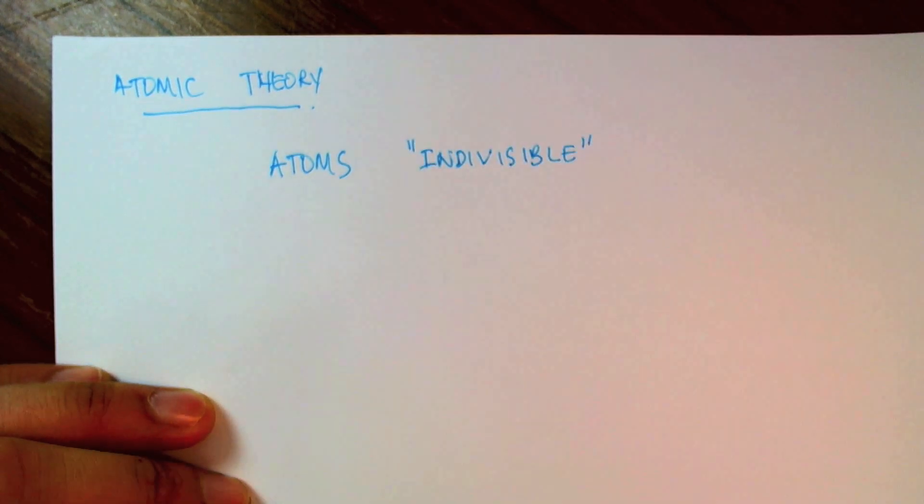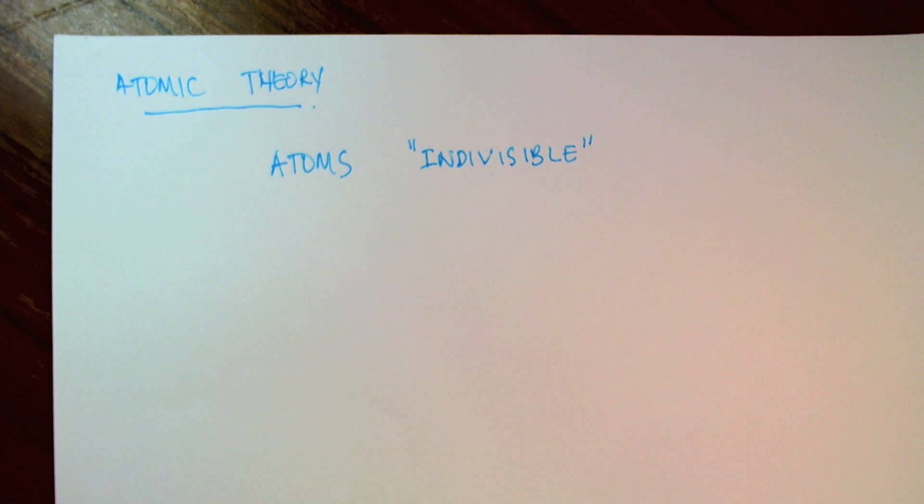These are the smallest units of matter that we can get, according to Democritus. Now, of course, we have more sophisticated theories of what the atom is today, but what's amazing is that, just based on this atomic theory of Democritus that was discovered more than 2,000 years ago, we can actually explain a whole host of phenomena, as we'll see in a little while.